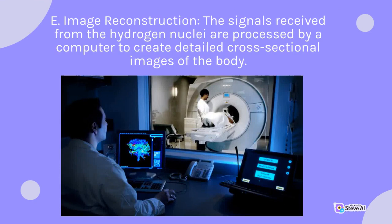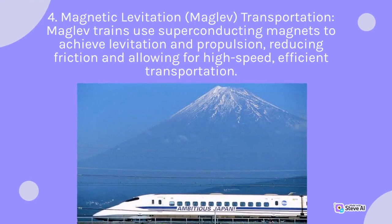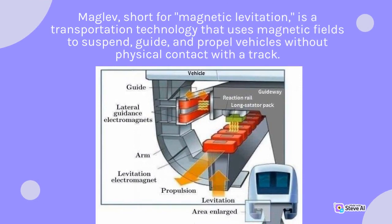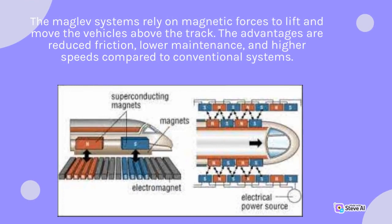Magnetic levitation (maglev): maglev trains use superconducting magnets to achieve levitation and propulsion, reducing friction and allowing for high-speed, efficient transportation. Maglev, short for magnetic levitation, is a transportation technology that uses magnetic fields to suspend, guide, and propel vehicles without physical contact with a track. Maglev systems rely on magnetic forces to lift and move vehicles above the track, with advantages of reduced friction, lower maintenance, and higher speeds compared to conventional systems.